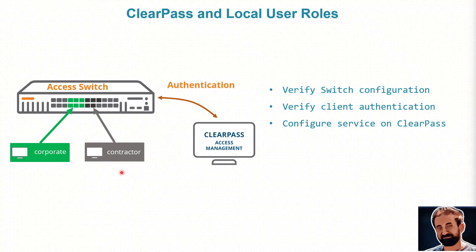ClearPass will configure a service, and the action sent back to the switch will be the role assignment. That role has been created on the switch — one or multiple of them — and then the role will be applied to that specific connection. All settings in the role will be applicable to that user. We're going to verify the switch config, verify client authentication, try different types of clients, and see how to configure the service in ClearPass.